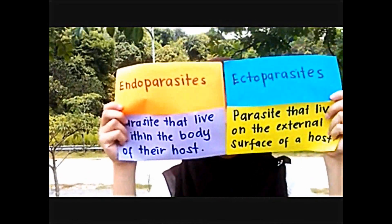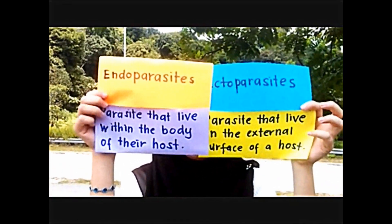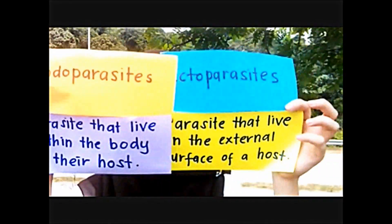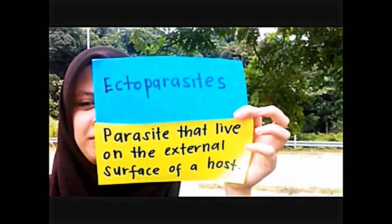Parasitism is number three. Parasitism is where the parasite derives nutrition from another organism, its host, which is harmed by the process. It is a positive and negative interaction. Parasitism consists of endoparasites and ectoparasites. Endoparasites are parasites that live within the body of their host, while ectoparasites are parasites that live on the external surface of a host.